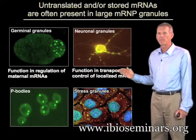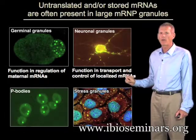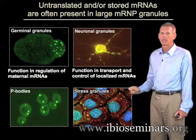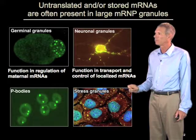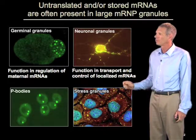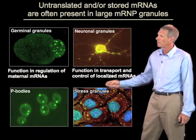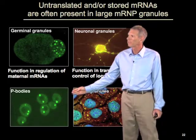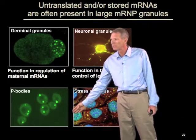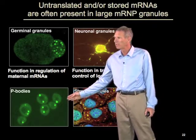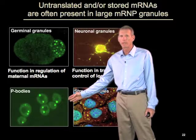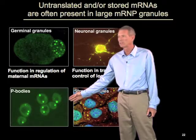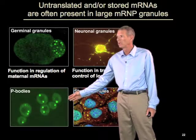These repressed mRNAs often end up in large RNA protein granules in the cytoplasm. Repressed RNAs often end up in structures in somatic cells — be they yeast, humans, plants, C. elegans — every eukaryote looked at so far — which are called p-bodies.